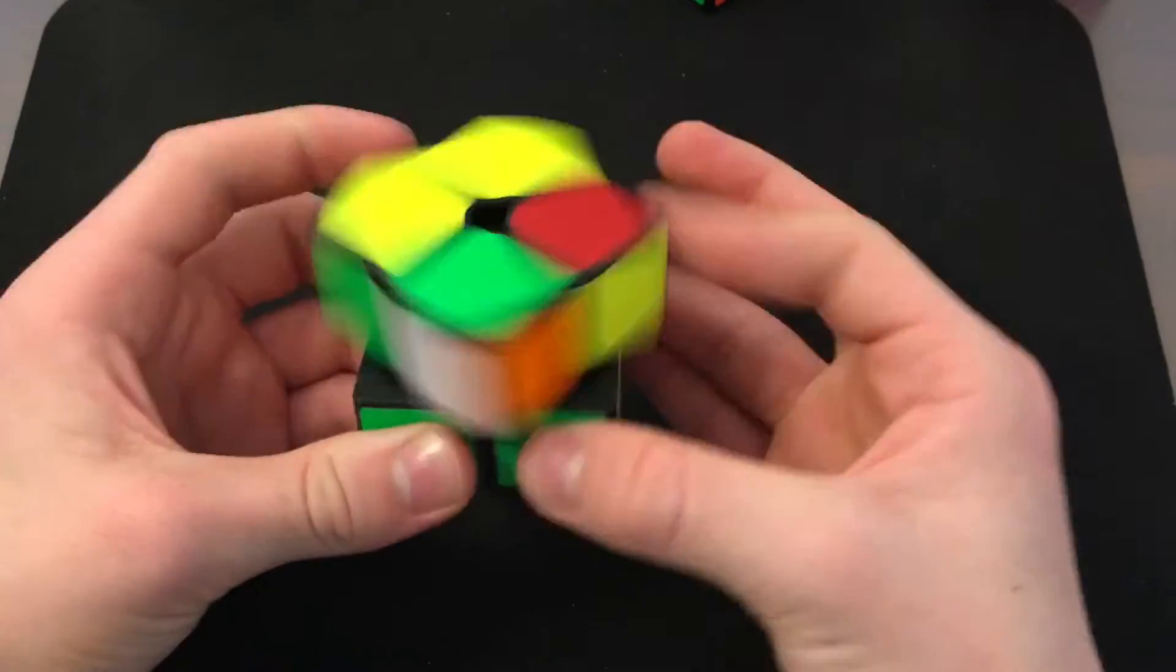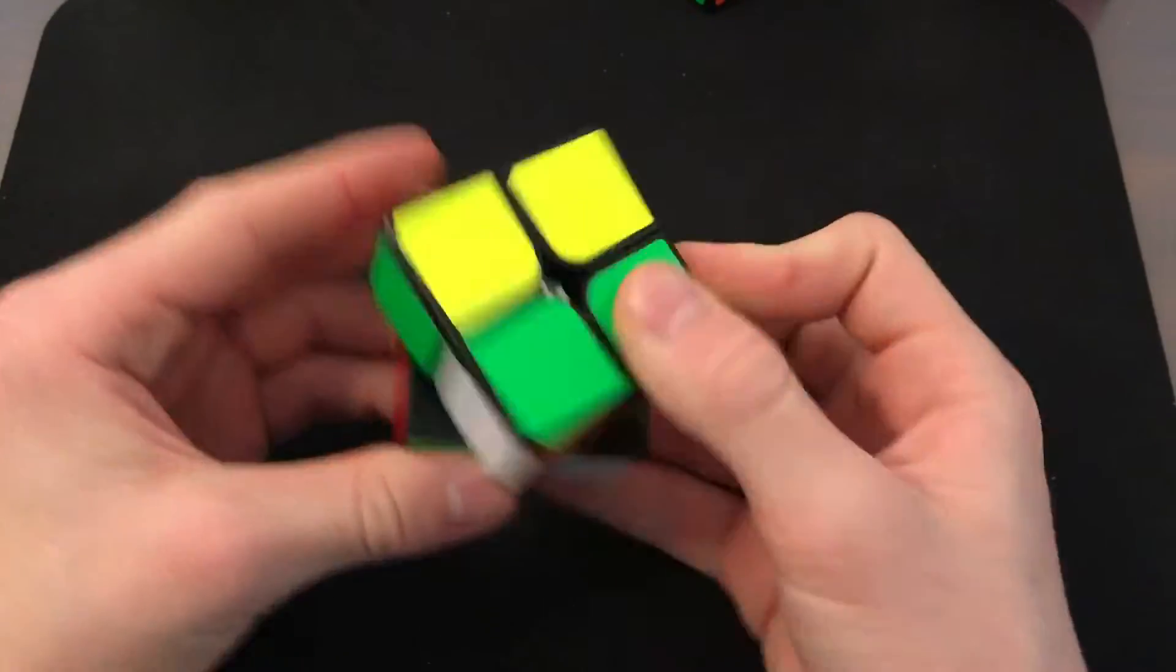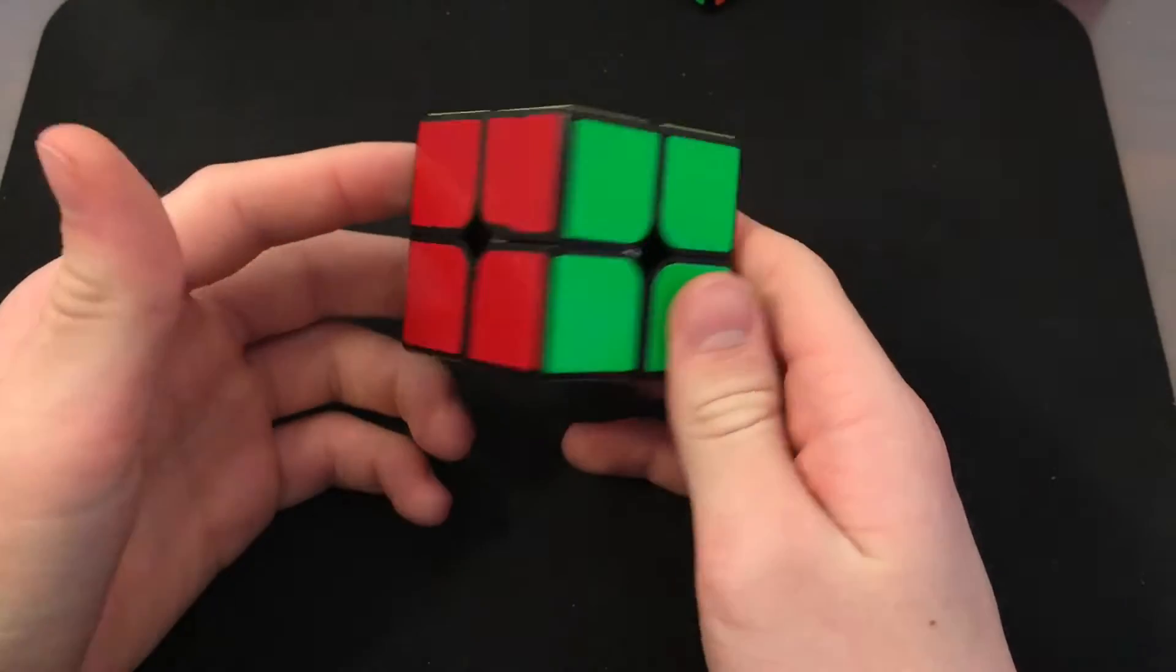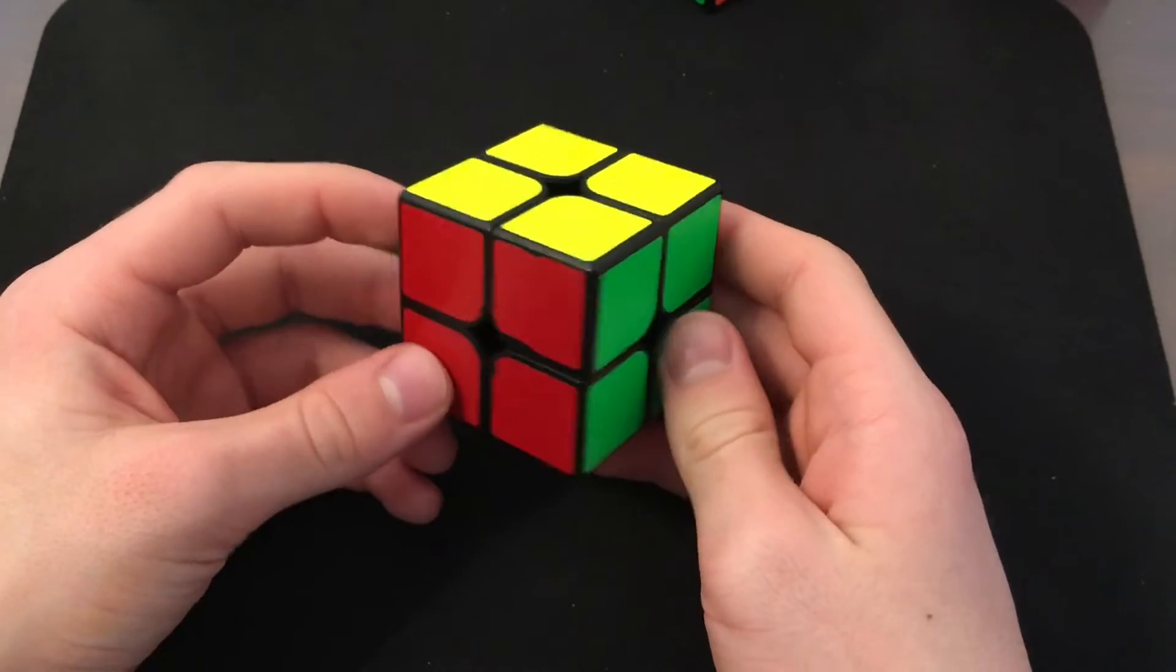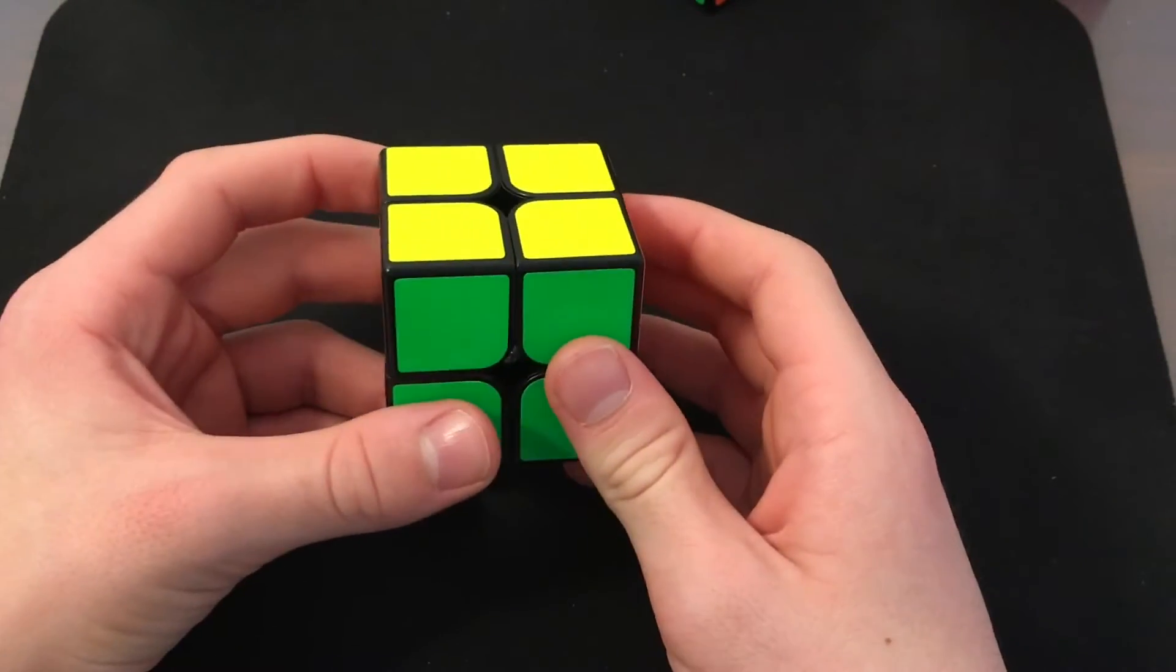Two by two, I'm using the Yushin white two by two, very good cube, and I'm going for a sub seven average mainly because I haven't been practicing and this is my first comp so I'm gonna be very nervous.